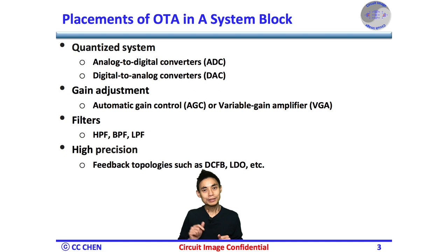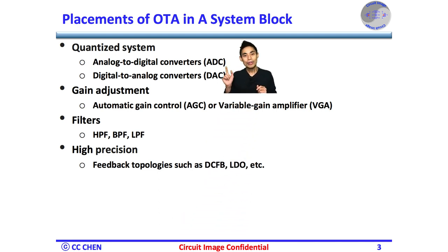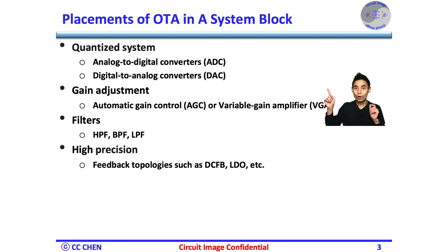After knowing the OTA and why you need it, let's nail down where we may place it in a system block. The most popular placement of the OTA is the quantized system, such as analog-to-digital converter ADCs or digital-to-analog converter DACs. Owing to the transconductance controlled by bias current, the gain of the OTA can be adjusted as an automatic gain control AGC or variable gain amplifier VGA.